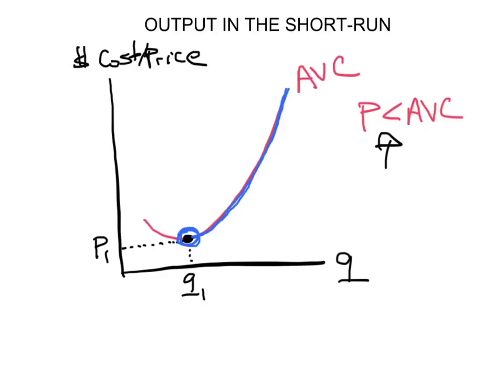This borderline where the price is equal to the average variable cost at the lowest point of average variable cost is called—I'll write it down here—the shutdown price.